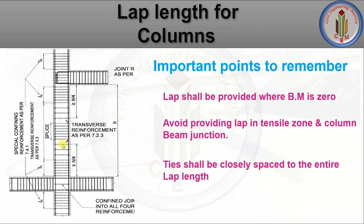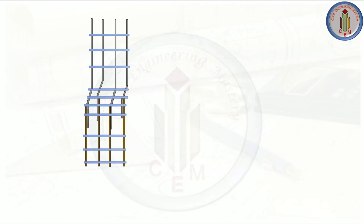Ties shall be closely spaced throughout the entire lap length. Where we provide lapping of bars, in that area the lateral ties have to be closely spaced. Here the tie spacing is far apart, and in the lapping zone the tie spacing is very close.